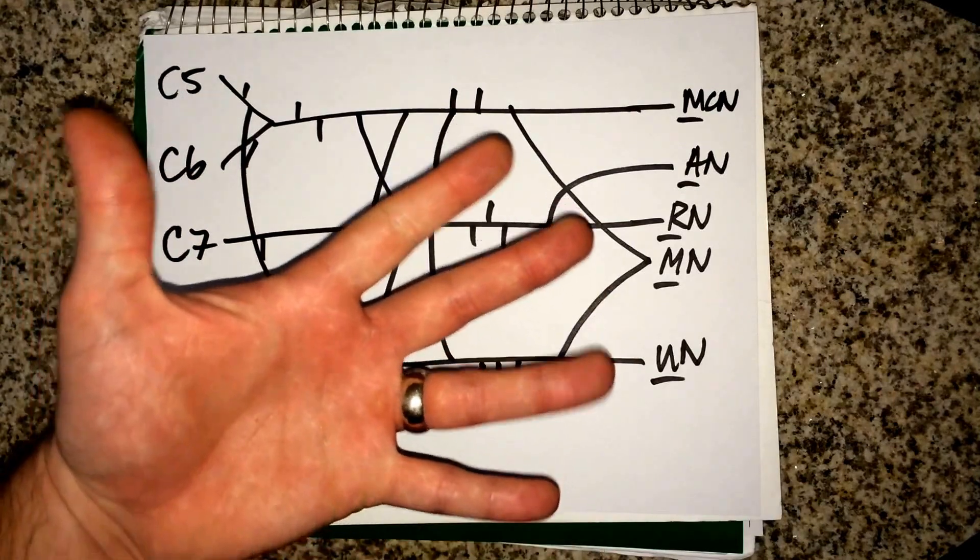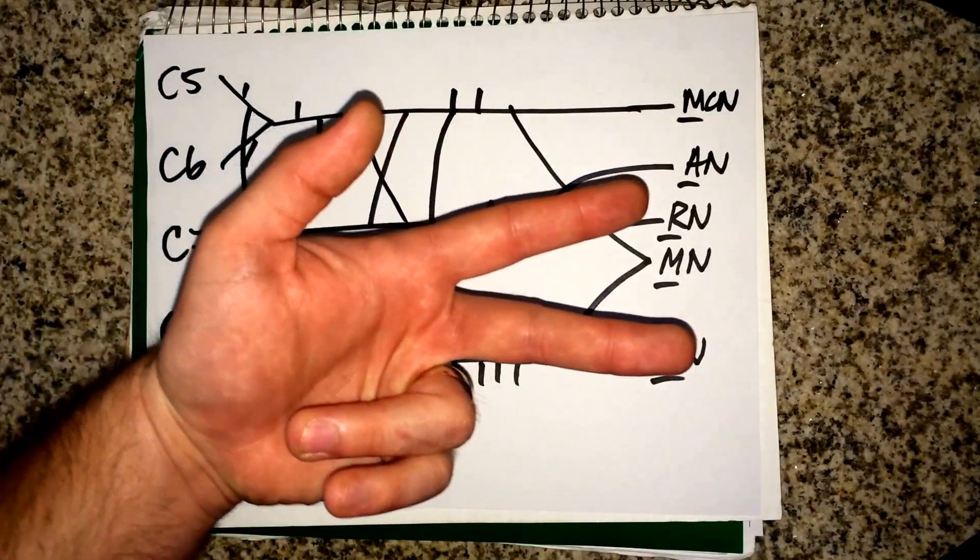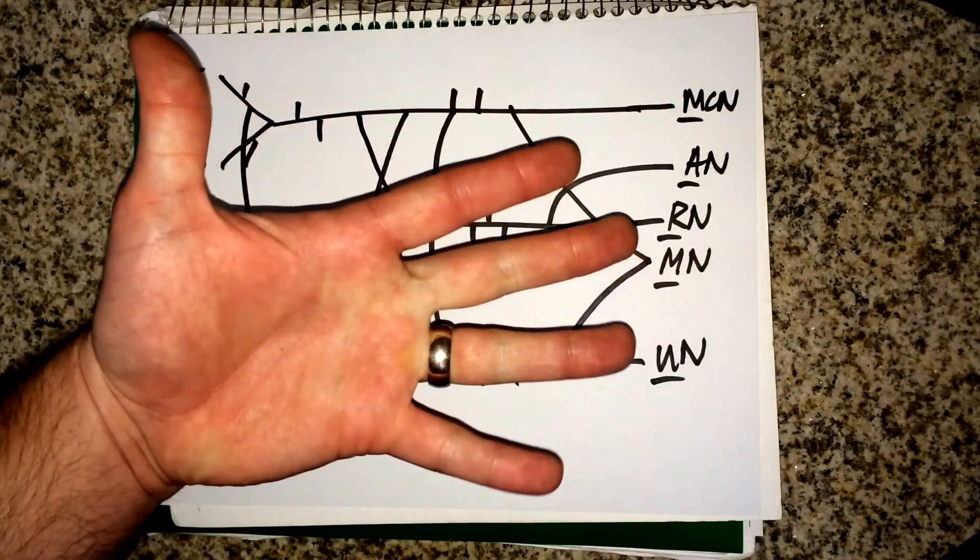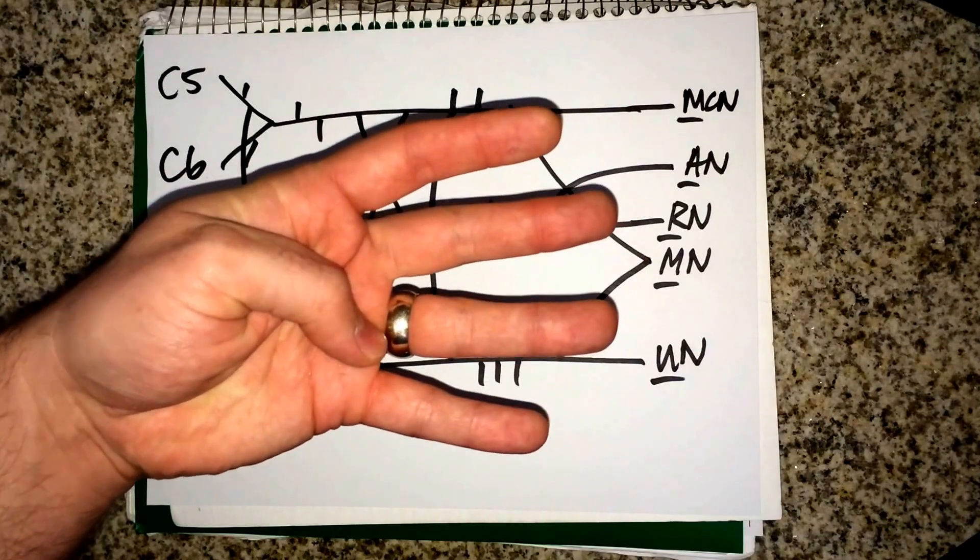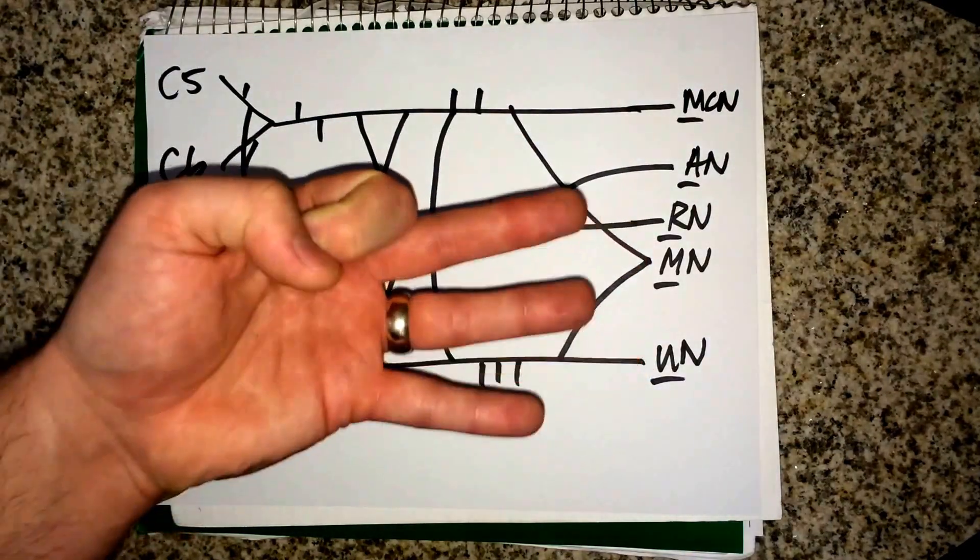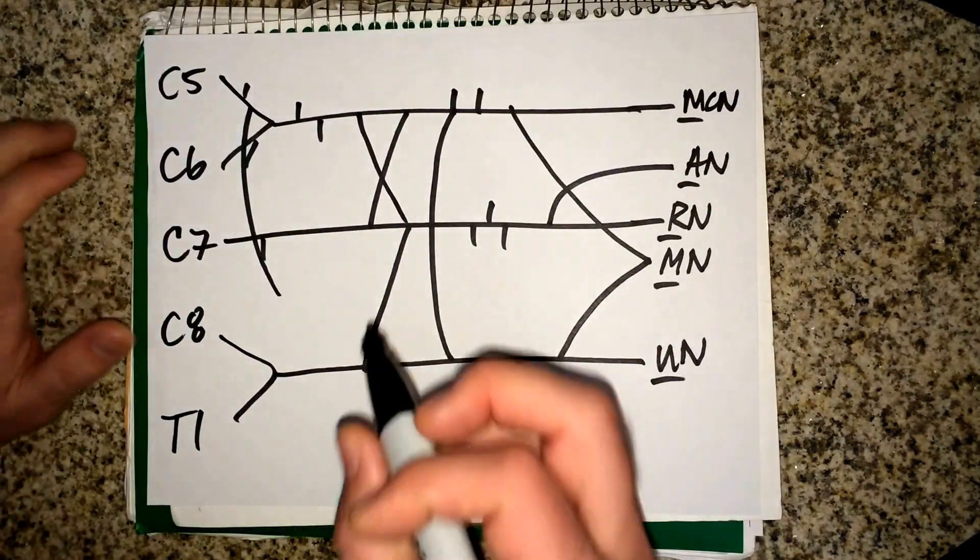So let's do that one more time. Musculocutaneous nerve is your three musketeers. Assassinate for axillary. Five rats for radial. Four mice for median nerve. And unconditionally for ulnar nerve. So try that out and see if it helps.